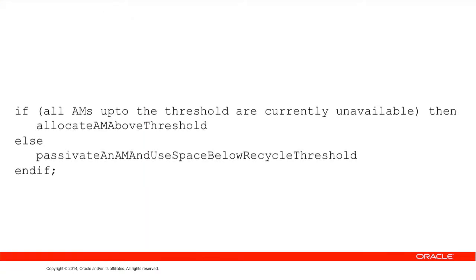Potentially a way to summarize this and reinforce it in your mind is in the following pseudocode: if all the AMs up to the threshold are currently unavailable, then what the pool will do is allocate an Application Module above the threshold — it will instantiate a new one. Otherwise, we passivate an existing Application Module and use the space below the Recycle Threshold.